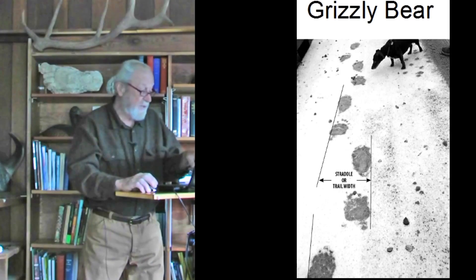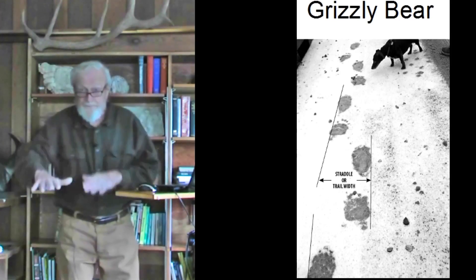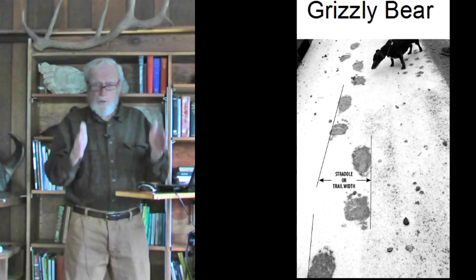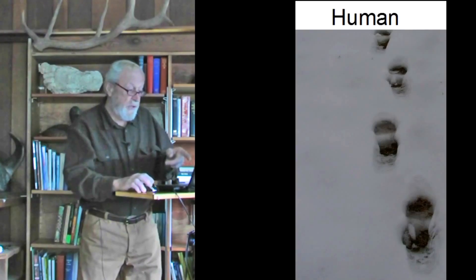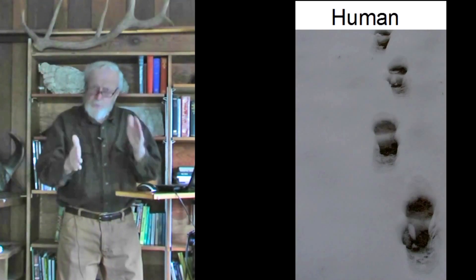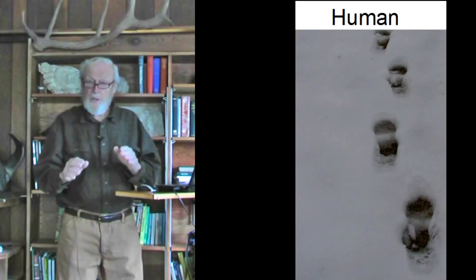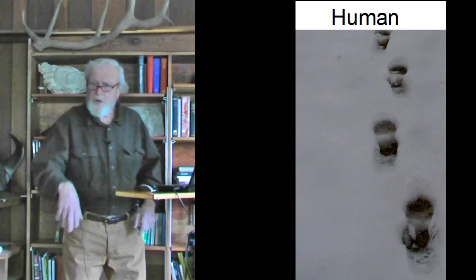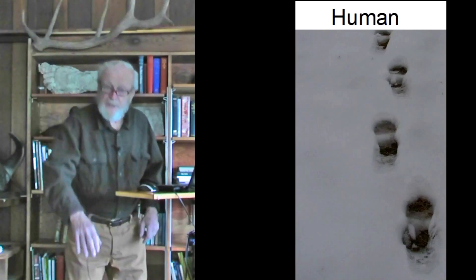Anyone interested in tracking knows we can't just rely on individual tracks, but the pattern of tracks — the trackway, or technically a trail — shows us a great deal about the animal. Here is a trail of grizzly bear tracks on a road, showing both hind foot and forefoot, and a straddle or width to the trail. Here's a human trail in snow — we humans when we walk also show a certain amount of straddle or trail width, and in deeper snow we tend to do this scuffing where our heel slides in and our toe drags out.